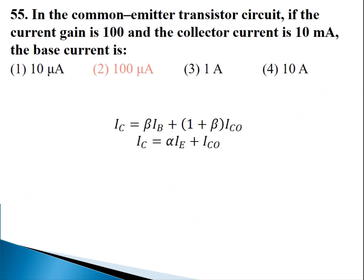The next question involves a common emitter transistor circuit. Current gain for common emitter is beta, for common base is alpha, and for common collector is gamma. Given beta = 100 and collector current IC = 10 mA, we need to find the base current. Using IC = β·IB (assuming ICO ≈ 0), IB = IC/β = 10 mA / 100 = 100 μA.